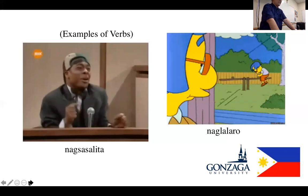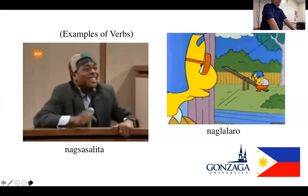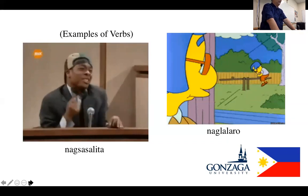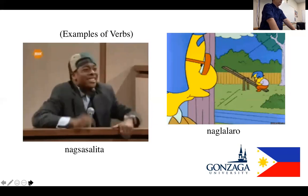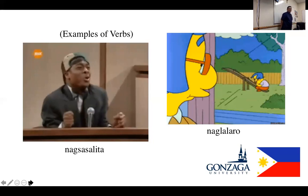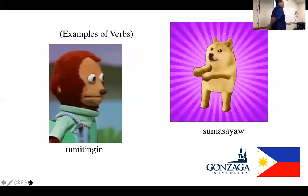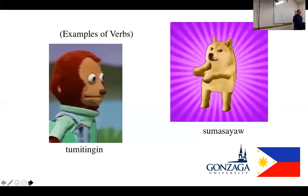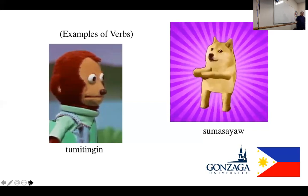One thing to remember: if there is a duplication of syllable — for example, naglalaro, nagsasalita — the verb is ongoing or progressive. If there is a repetition of syllables, the action is continuous. Next: 'tumitingin' — root is 'tingin,' which can be a verb like 'look,' 'see,' or 'watch,' or a noun like 'gaze.' And 'sumasayaw' — root is 'sayaw,' which can be a verb meaning 'to dance,' or still the noun 'dance.'